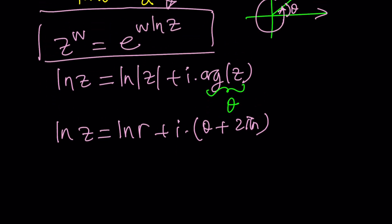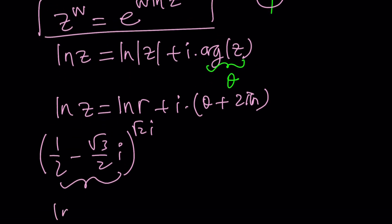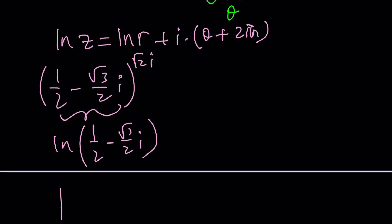So we have one half minus root 3 over 2i to the power root 2i. The base is going to be z in this case, so let's talk about ln one half minus root 3 over 2i. You probably realize its modulus is 1. So the absolute value of one half minus root 3 over 2 is 1, because these numbers should be familiar to you. They are like cosines and sines of something. So that's 1, which means ln 1 is going to be 0.